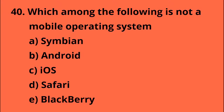System software controls the computer. Which among the following is not a mobile operating system? Option D — Safari.